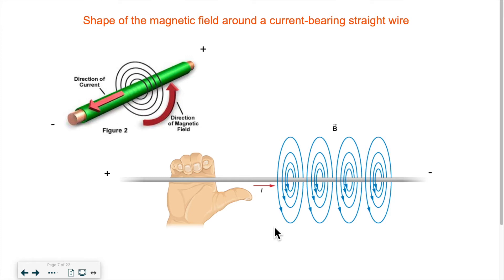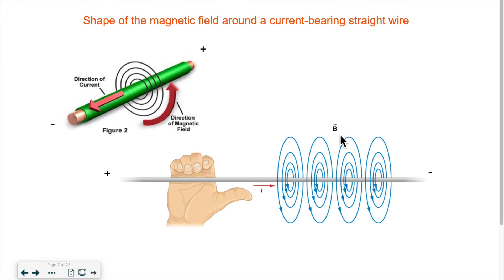This is called the right-hand rule. Before I get to this I just want to point out a few things about this image. We have the current I — it flows in this direction. It makes sense because the positive end of the setup is here, the negative end is here, and we know that current always flows from positive to negative. As I told you, the field that gets created is circular around the wire and it will rotate either clockwise or counterclockwise depending on the case. The symbol that represents the magnetic field is B with a little arrow on top — capital B with a little arrow.